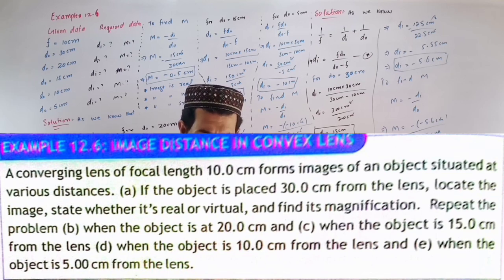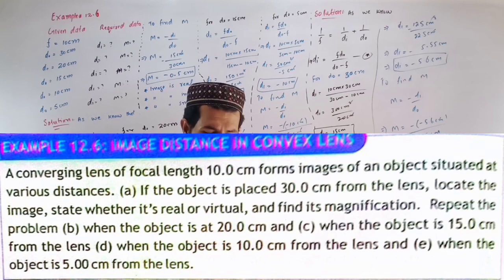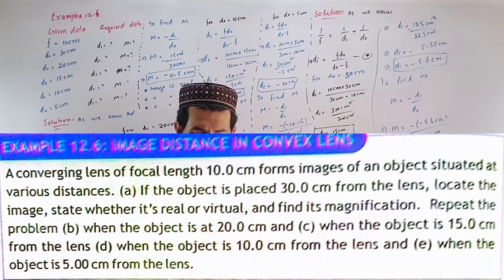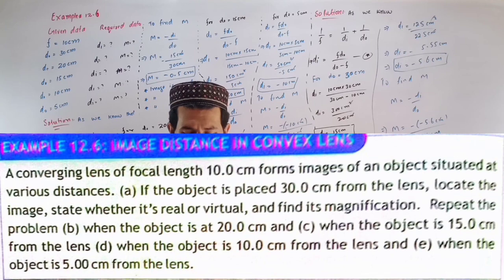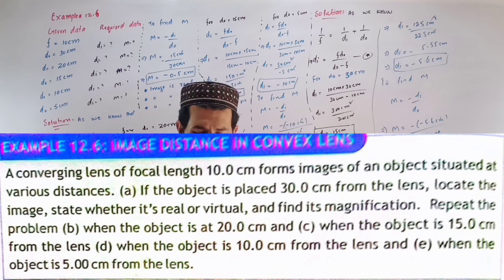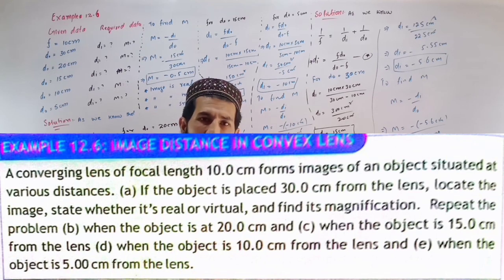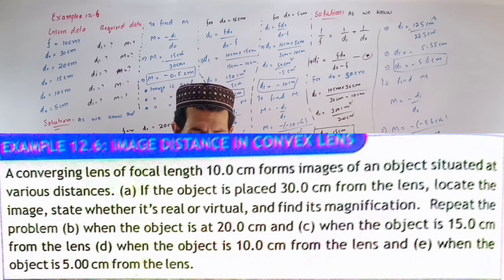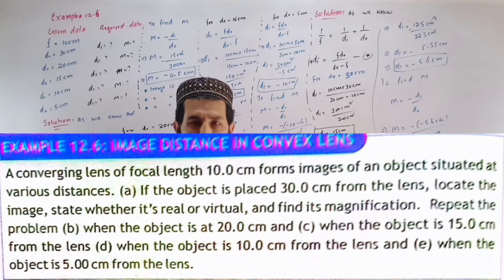10 cm forms an image of an object situated at various distances. A converging lens is a convex lens. If the object is 30.0 cm from the lens, locate the image. State whether it is real or virtual. If the image is real, then find its magnification.